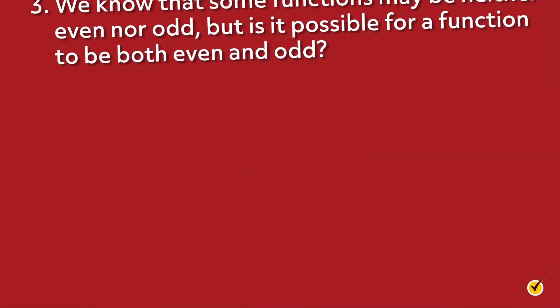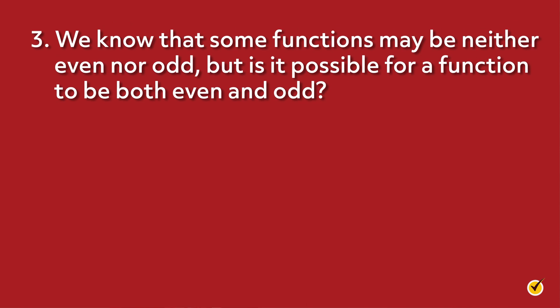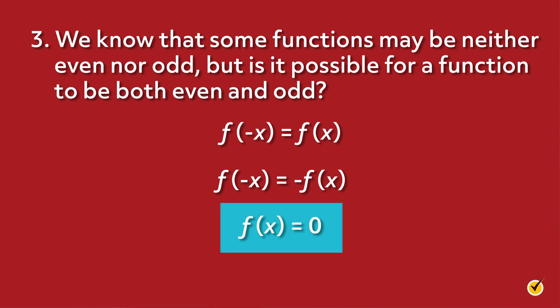Let's finish with a more conceptual question. We know that some functions may be neither even nor odd, but is it possible for a function to be both even and odd? Surprisingly, the answer is yes, but only for one function. Can you think of what that function is? Remember that for even functions, f(-x) equals f(x), and for odd functions, f(-x) equals negative f(x). The only way both of these can be satisfied is when f(x) equals zero.